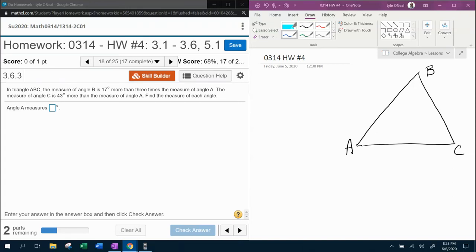All right, here we go. Question number 18 from our 0314 homework number 4 in MyLabMath. We have a bit of a word problem. It says, in triangle ABC, the measure of angle B is 17 degrees more than 3 times the measure of angle A. The measure of angle C is 43 degrees more than the measure of angle A. Find the measure of each angle.